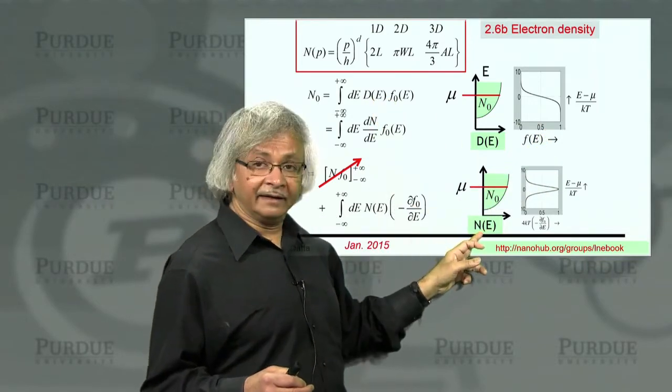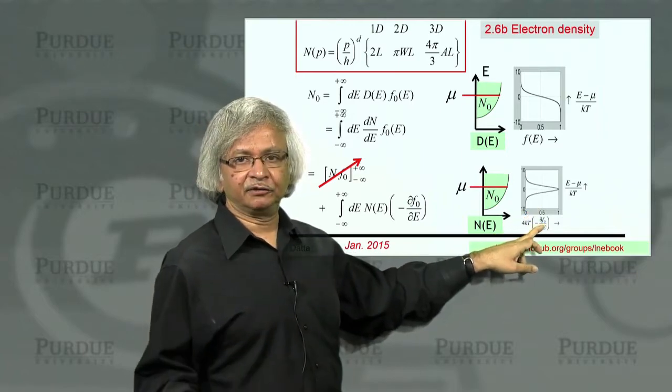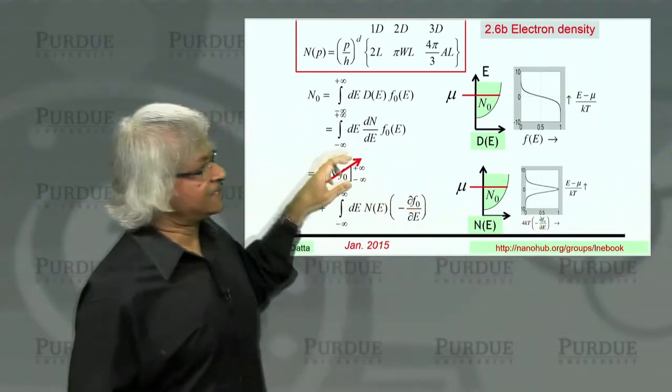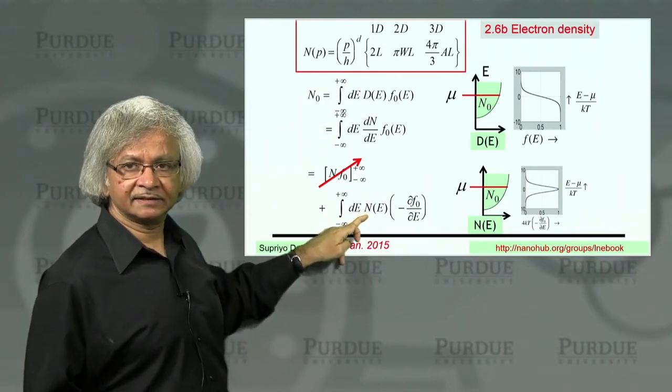Or you could take N, multiply it by the derivative of the Fermi function, and integrate. And those are the same thing. This is mathematically the same result as that.